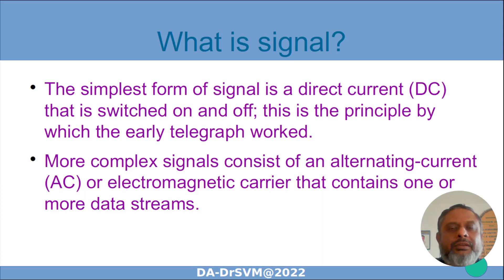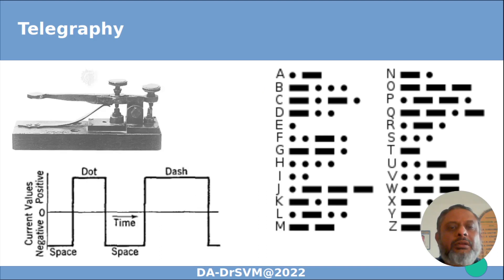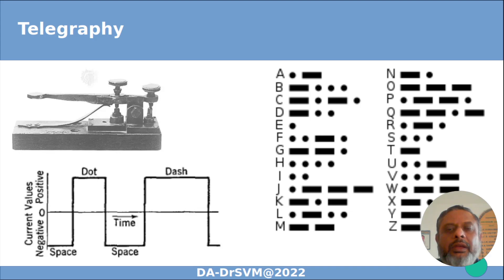Later, complex signals like alternating current or electromagnetic carriers containing one or more data streams came into existence. That's telegraphy — long distance communication began. Each alphabet is given a code. For example, A is a dot followed by a dash; a dot means a small one and a dash is a longer one. This dot and dash arrangement is the Morse code, which is used for transmitting data.